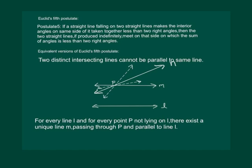This result can also be stated as: for every line L and for every point P not lying on it, there exists a unique line M passing through P and parallel to L.